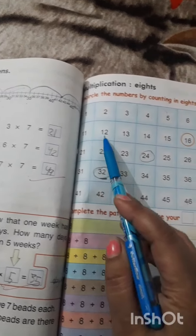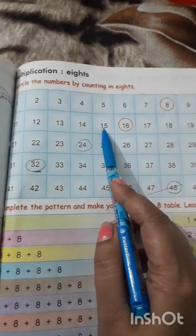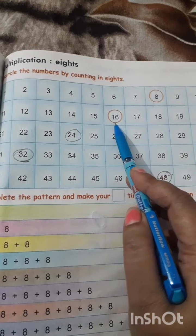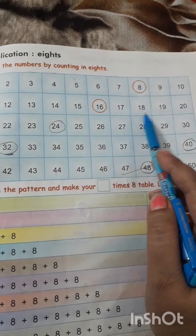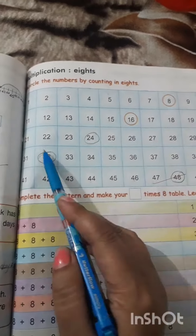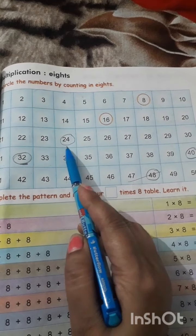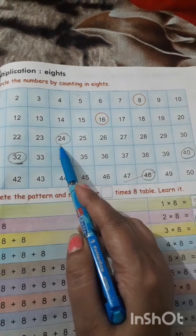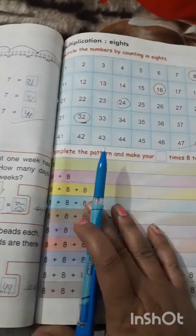After that, I will skip 9, 10, 11, 12, 13, 14, and 15. And encircle 16. We will skip 17, 18, 19, 20, 21, 22, 23. And encircle 24. Do rest of the parts yourself.